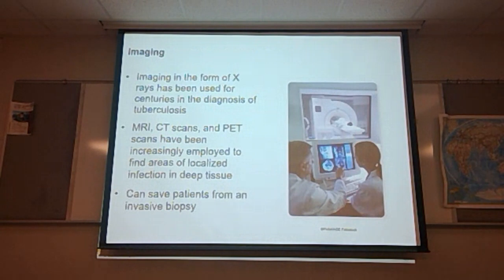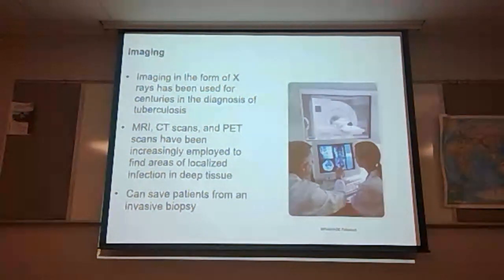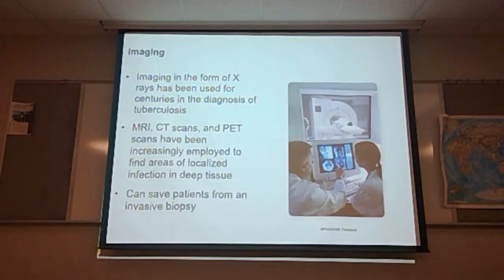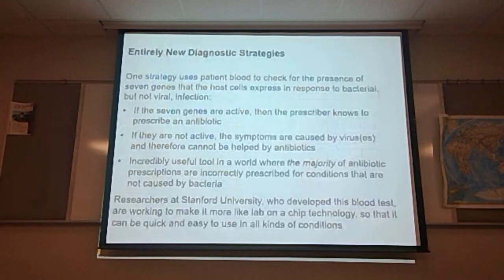Imaging in the form of x-rays has been used for centuries in the diagnosis of tuberculosis. MRI, CT scans, and PET scans have been increasingly employed to find areas of localized infections in deep tissues. These types of tests, as they improve, save patients from invasive biopsies — for example, imaging a spot on the lung with an MRI rather than performing a needle biopsy.